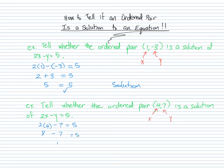So we get 8 minus 7 is equal to 5. Hmm, that looks a little bit fishy. 1 is equal to 5? Well, in no world can 1 be equal to 5. So all of these statements are not true, and for that reason, this is not a solution.